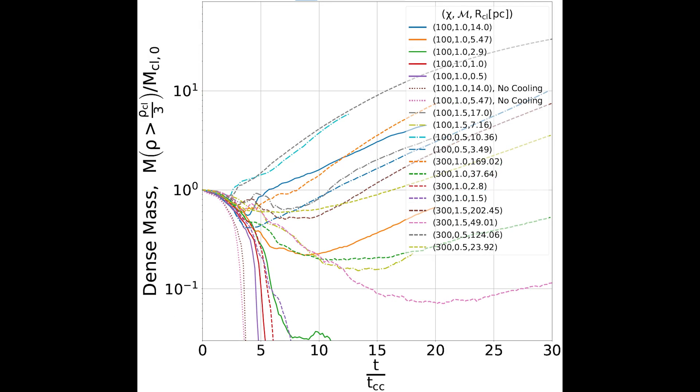We analyze our simulation in terms of integrated cloud properties like mass in the dense phase and speed of the cloud material relative to the hot wind. This is one of the important results from our simulation. Here in this plot, one can see that the mass in the dense phase rises for clouds satisfying the Gronke Oh criterion if radiative cooling is turned on.